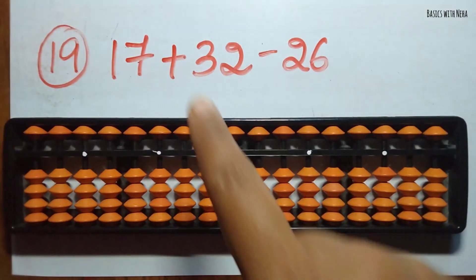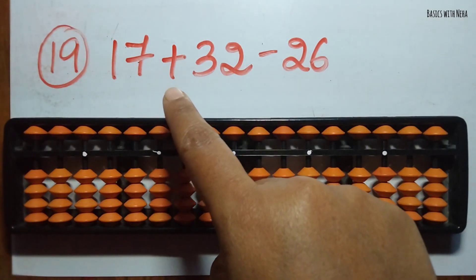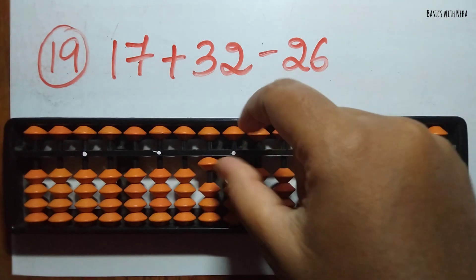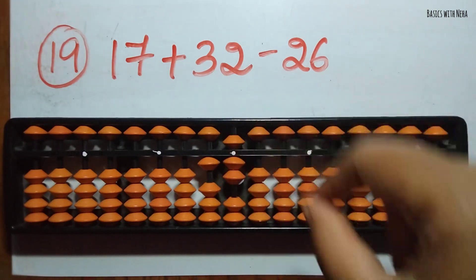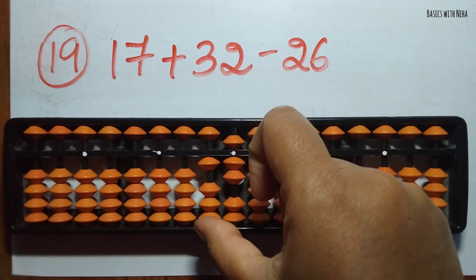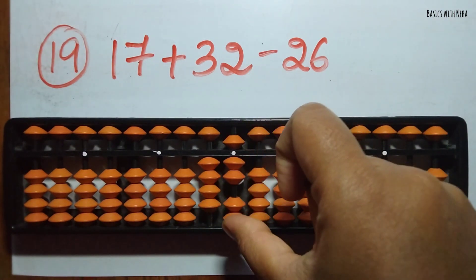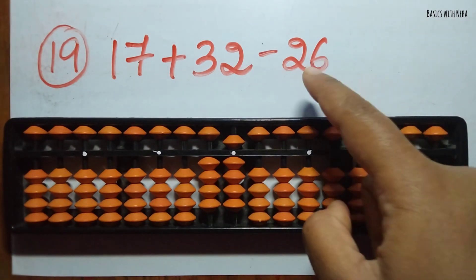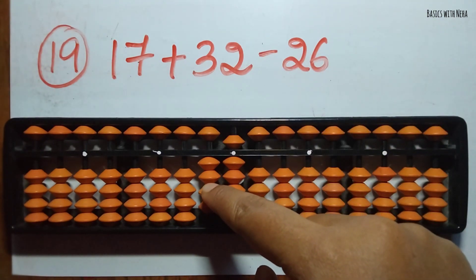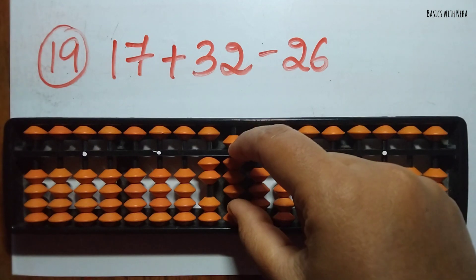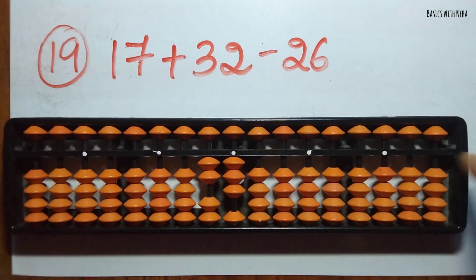The 19th sum: 17 plus 32 minus 26. First take 17. Now we should add 32 — add 3 in the 10's rod and add 2 in the 1's rod. Minus 26 — you can remove 2 beads in the 10's rod and remove 6 beads in the 1's rod. The answer is 23.